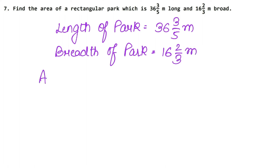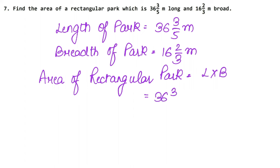Now we have to find the area of rectangular park. Area of rectangular park is length times breadth. How much was our length? 36 whole 3 upon 5 meter. And how much was the breadth? 16 whole 2 upon 3, and since this area units are square units, I am writing meters square.